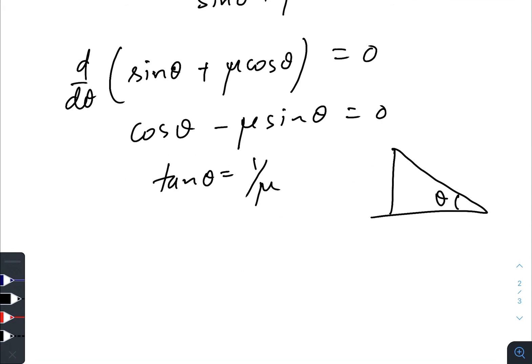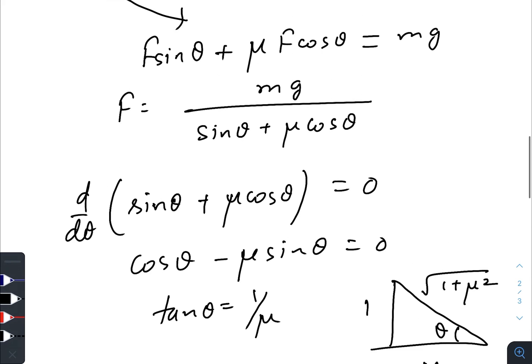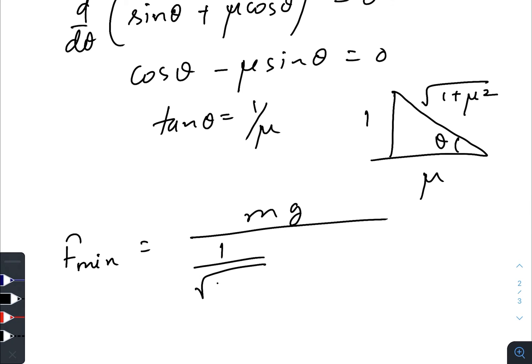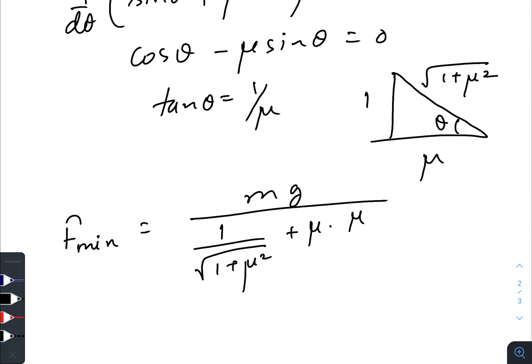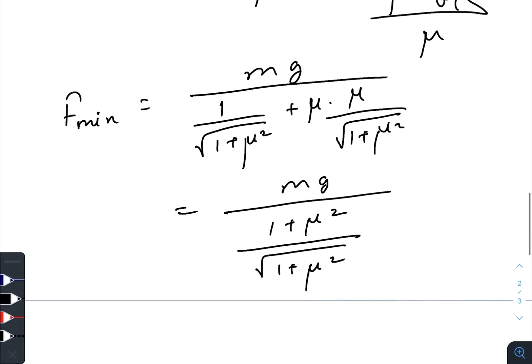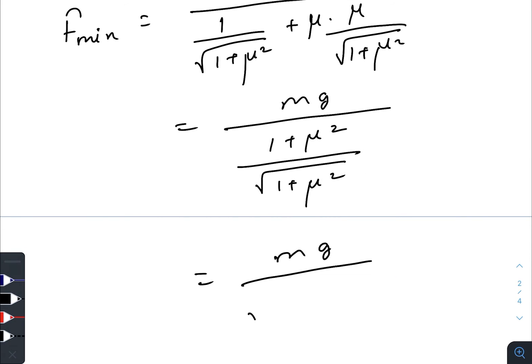So tan θ equals 1 by μ, that is 1 plus μ squared. The minimum value of F would be mg divided by sin θ, which is 1 divided by √(1 + μ²), plus μ cos θ. So cos θ is μ divided by √(1 + μ²). So we have mg divided by 1 plus μ squared. That would give you mg divided by √(1 + μ²).